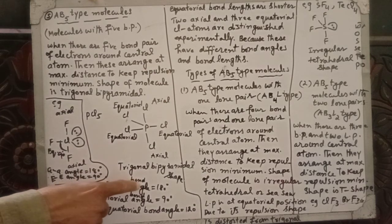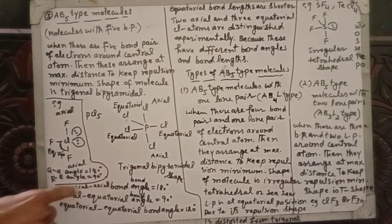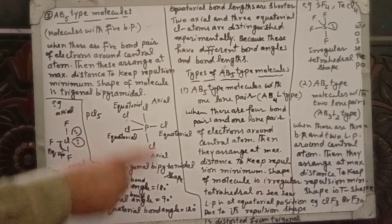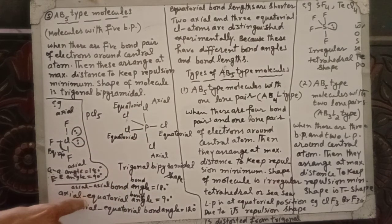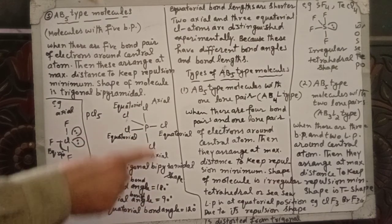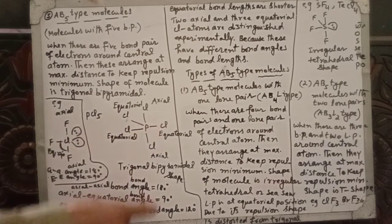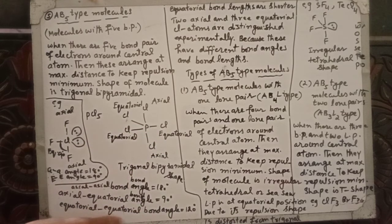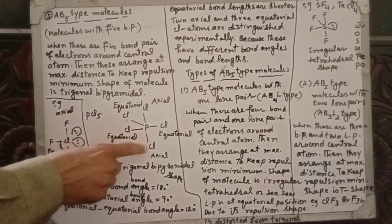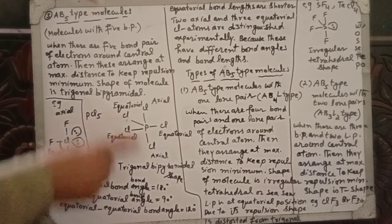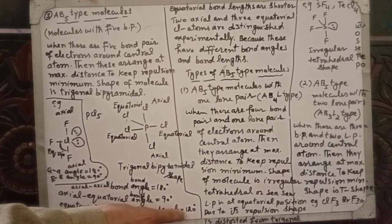Looking at the bond angles: the axial-axial bond angle between Cl and Cl is 180 degrees. The axial-equatorial bond angle is 90 degrees. The equatorial-equatorial bond angle is 120 degrees.